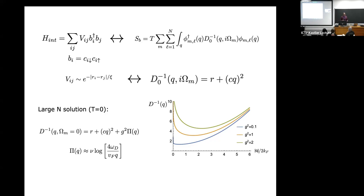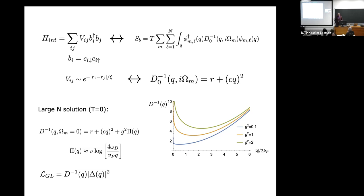For those without intuition about inverse propagators: if I integrate out the fermions, the exact inverse propagator is the coefficient of the quadratic term in Ginzburg-Landau theory, which must vanish at a phase transition. But it's always positive — even at T equals zero it remains positive because the pair susceptibility is a positive function. So we fail to capture pair density wave order in this way.